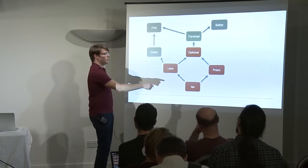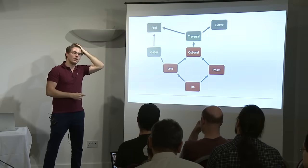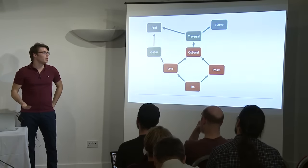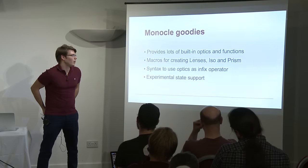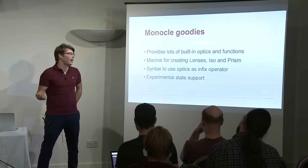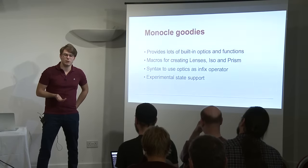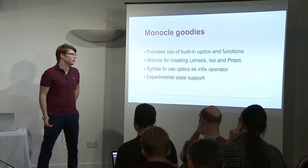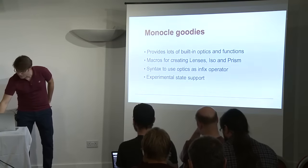Just to round up today: we saw four optics — ISO, lenses, prism, and optional. What I didn't show you is traversal, fold, setter, and getter. This is what's in Monocle. If you go to Haskell Lens, there are even more concepts. In Monocle specifically, on top of this we implement most of what I showed today for all standard library functions and ScalaZ constructs and data structures. Optics are useful to cut down boilerplate, but you need some boilerplate to generate your optics, so we created some macros to simplify the use of optics and we have some syntax helpers.